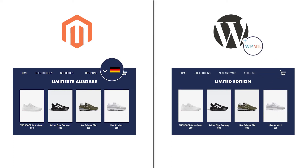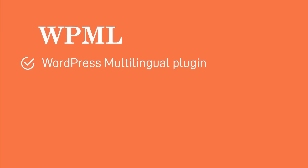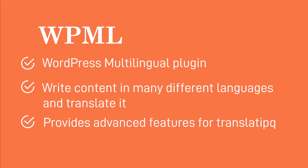In this case, you first need to install a plugin that enables a multilingual mode on your WordPress store. WPML is a WordPress multilingual plugin which allows authors to write content in many different languages and translate it. Moreover, it also provides advanced features for translation management and an interface for professional content translation.